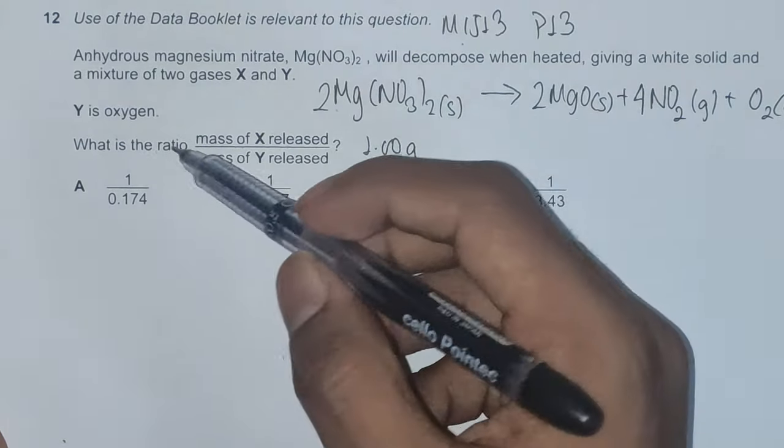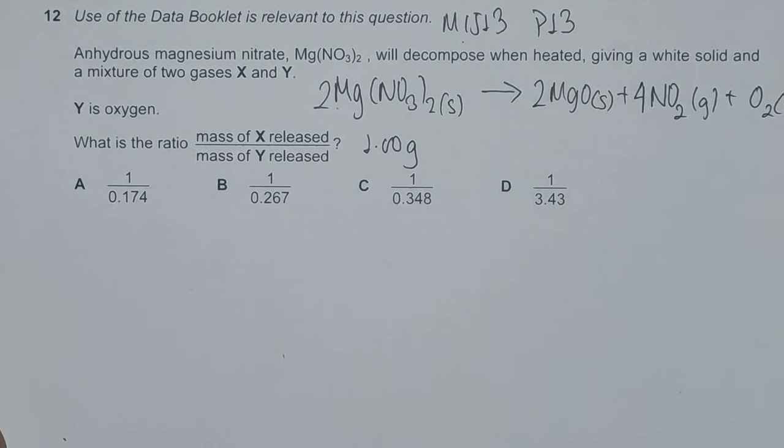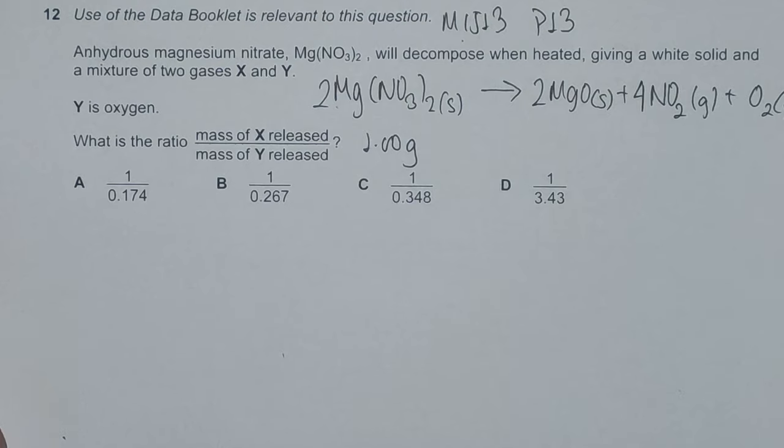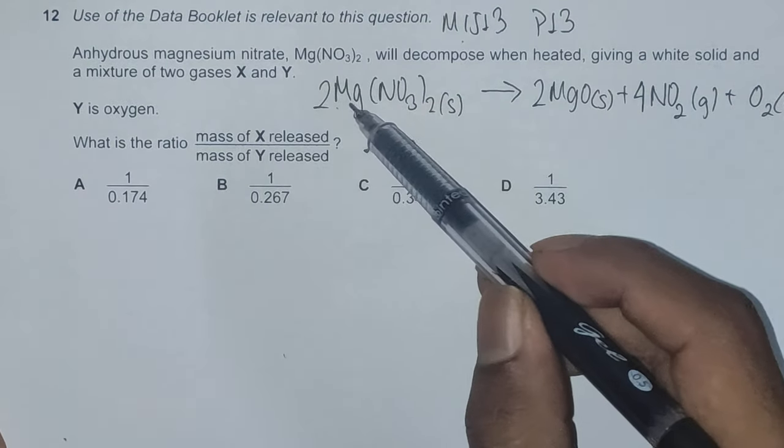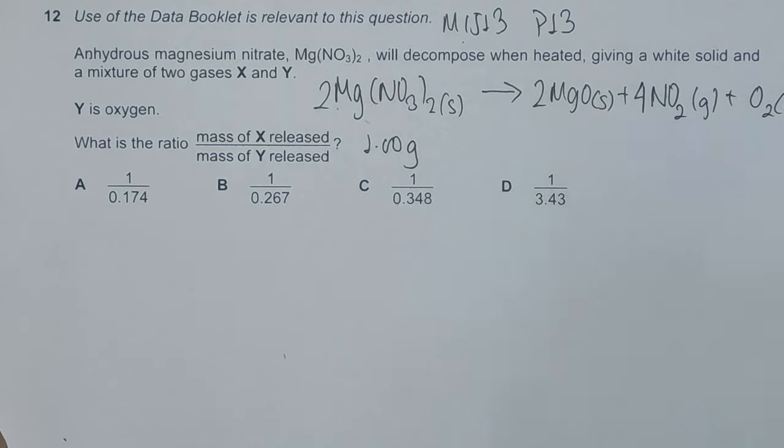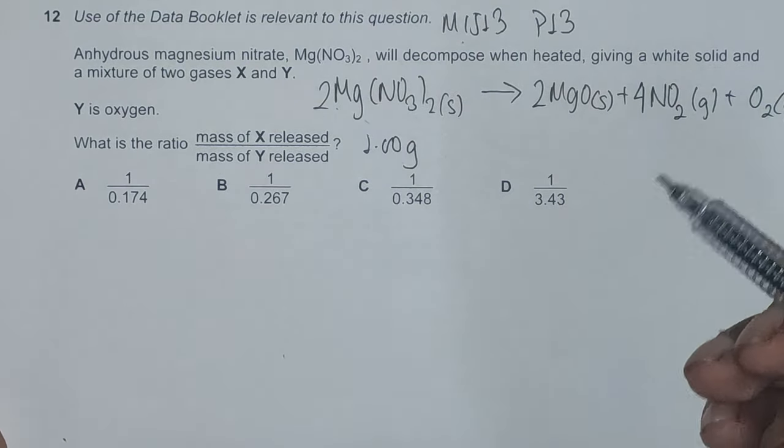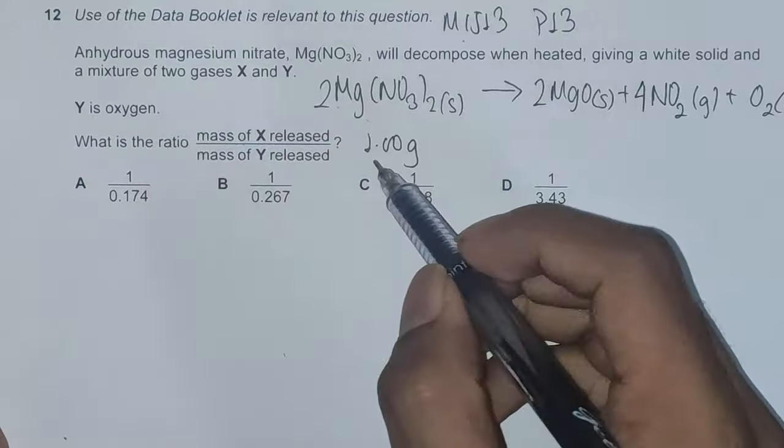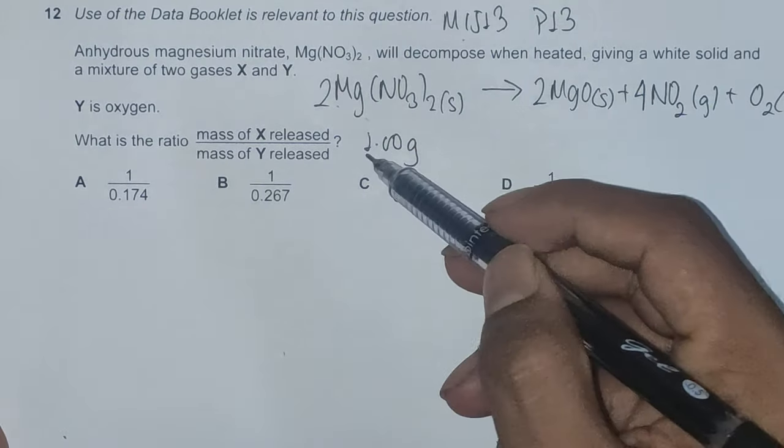we are just going to assume the initial mass of anhydrous magnesium nitrate is 1 gram. Because the final question asks the ratio, we need not really be concerned with what gram of magnesium nitrate we have been given. An alternative approach would be to consider mass of anhydrous magnesium nitrate as X, but it will just be complicating the equation even further and it's quite difficult to solve this within the time constraint. So we're assuming magnesium nitrate is total 1 gram.